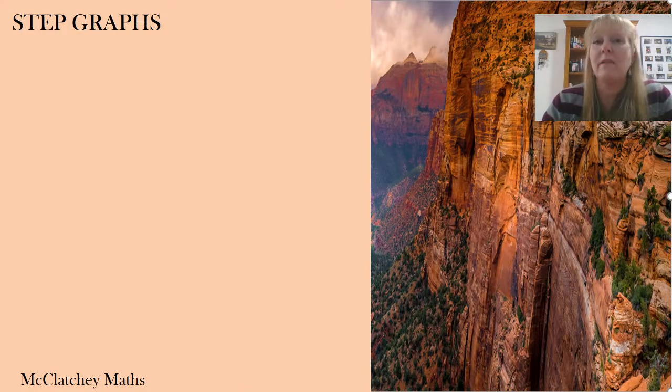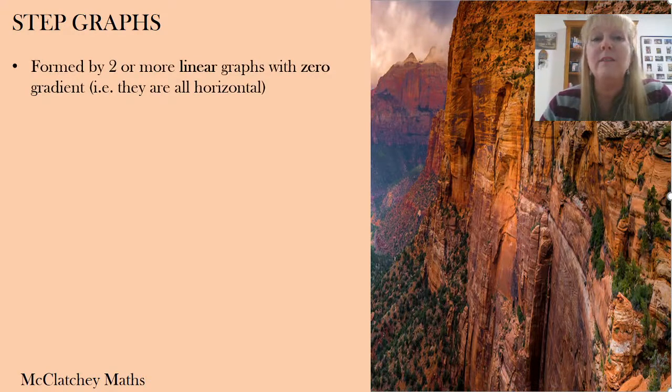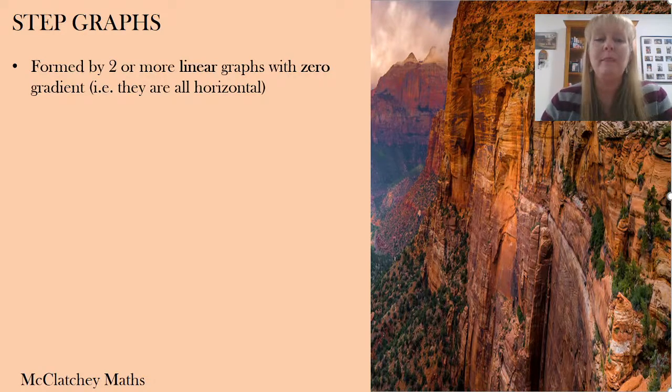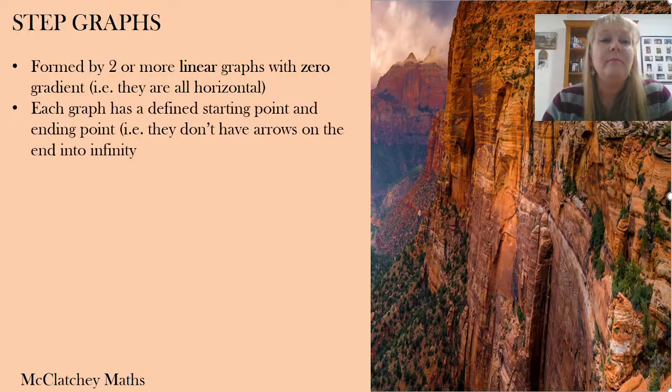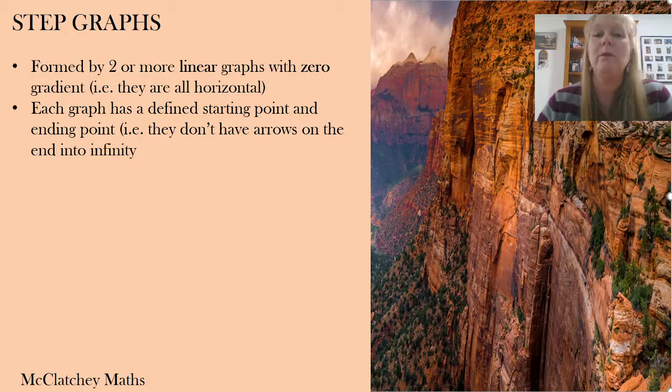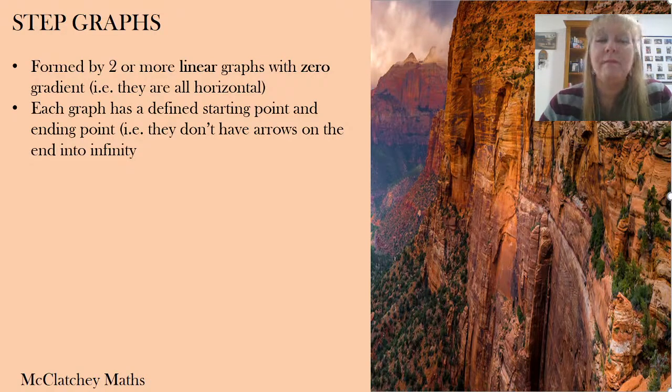Okay, let's have a quick look now at step graphs. So they're a little bit like a piecewise graph. They're formed again from two or more linear graphs, but this time they have a zero gradient. That means they're all horizontal. And because all the parts of this graph are horizontal, they are looking like a bit of a step, they're all parallel lines. Each graph is going to have a defined starting point and an ending point. That means they don't have arrows into infinity like your typical linear graph. But the only exception might be your very last line or your very first line if they incorporate all values into infinity. So we'll have a look at that with a concrete example and it will make more sense in a moment.